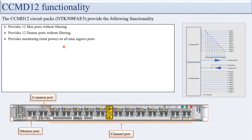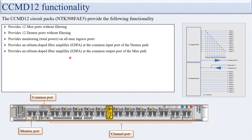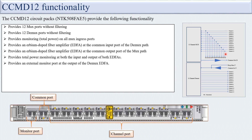The CCMD 12 provides monitoring on all MUX ingress ports. All ingress channels are monitored, and port 27 is used for monitoring. It provides an ADFA at the common input port of the DMUX path (port 25) and an ADFA at the common output of the MUX path. It also provides total power monitoring at both the input and output of both ADFAs, with the drop port monitored. An external monitor port is provided at the output of the DMUX ADFA — this is the drop port, port 27.